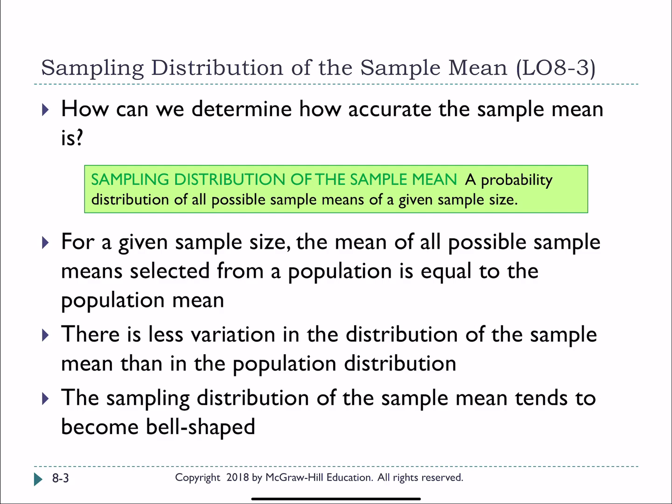And what we're going to find is for a given sample size, if we find the mean of all the possible sample means in that size, it will actually equal the population mean. We also know that there's less variation in our distributions of sample means than there are in the population's distribution. And the sampling distribution of the sample mean does tend to become bell-shaped. That is helpful because now we'll be able to use our empirical rule, where we'll find that 68 percent of our sample means will be plus or minus one standard deviation, 95 percent will be within two standard deviations, and 99.7 or virtually all are within three standard deviations.